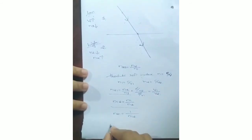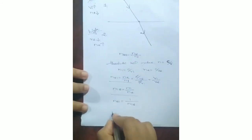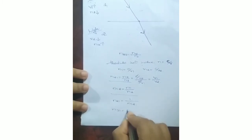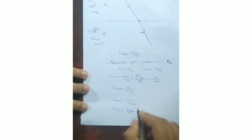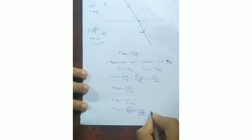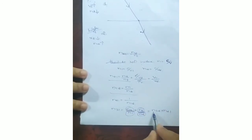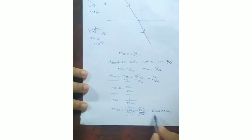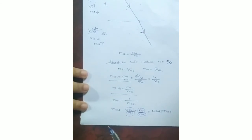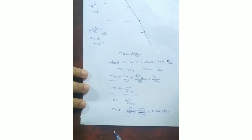One more thing to understand: if we have the refractive indices of different media, we can find the refractive index of any combination. For example, N31 = N3/N1. We can multiply and divide by N2 without changing the value, so N31 = (N3/N2) × (N2/N1) = N32 × N21. So if we have N32 (refractive index of the third medium with respect to the second) and N21, we can find N31. Using such equations we can find the refractive index with respect to any two media.